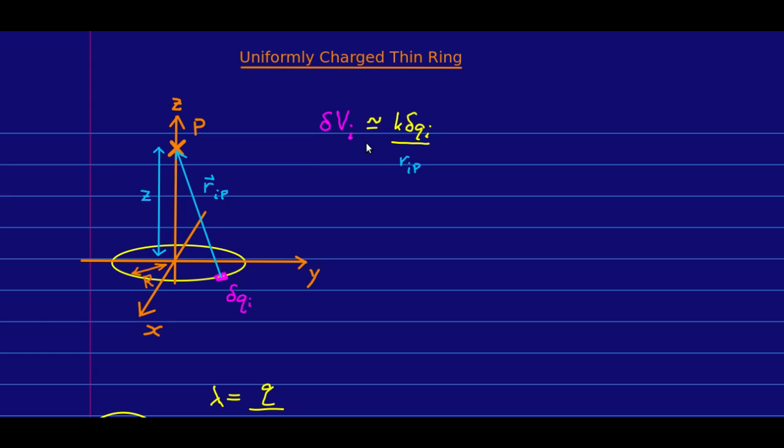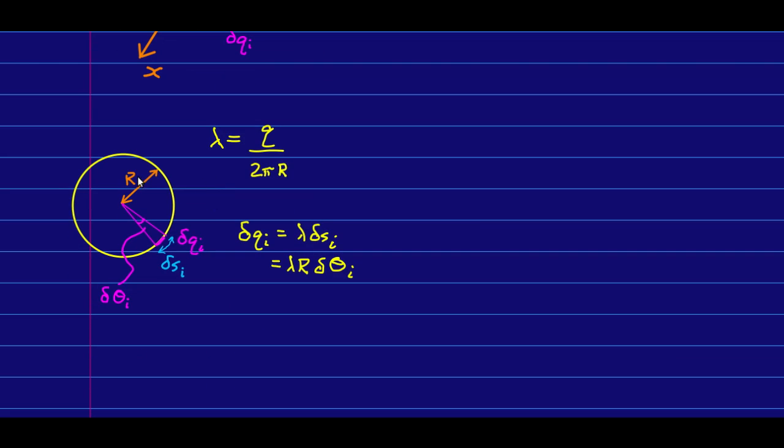Well, let's do the uniformly charged thin ring again. So here is the geometry, and we're going to have exactly the same definition for delta qi that we had when we did the field. We can define some little delta theta, and in radians, then, if delta qi is lambda times that arc length, then it's lambda r delta theta i.